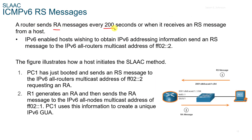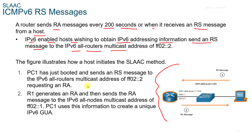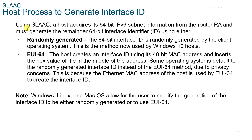For ICMPv6 RS messages, a router sends RA messages every 200 seconds, or when it receives an RS message from a host. A V6-enabled host wishing to obtain V6 addressing sends an RS message to the V6 all-routers multicast address. PC1 boots and sends an RS message requesting an RA. Router 1 generates an RA and sends it to the V6 all-nodes multicast address. PC1 then uses that information to create a unique IPv6 GUA.